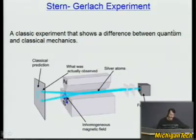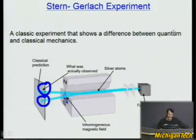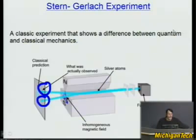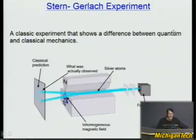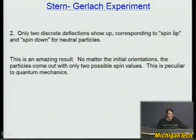So there are only two outcomes — this is a quantum result, not a classical result. Things like this can be used in entanglement experiments with Alice and Bob, but the key point here is that you should have seen a continuum, yet you only see two. No matter the initial orientations of the particles that go in, you only come out with two. This is peculiar to quantum mechanics.